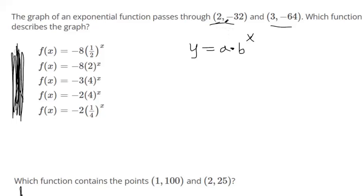We can plug in 2 in for x and negative 32 in for y. And then we're stuck, right? Can't solve, there's two different variables. So we can do that again by plugging in negative 64 in for y and 3 in for x.